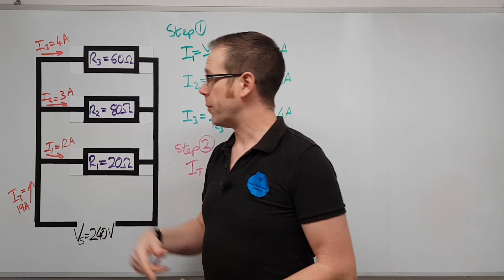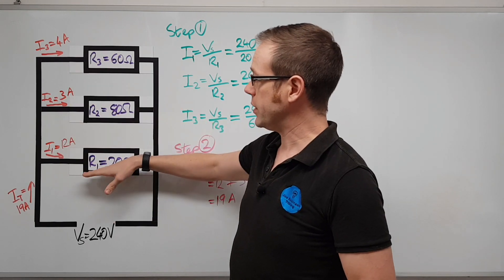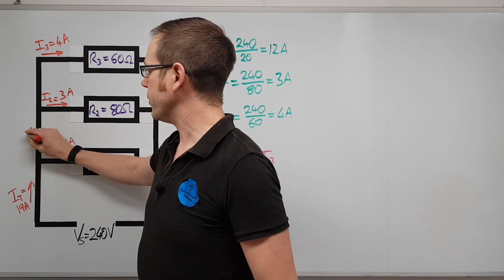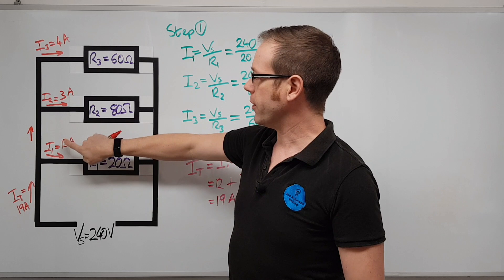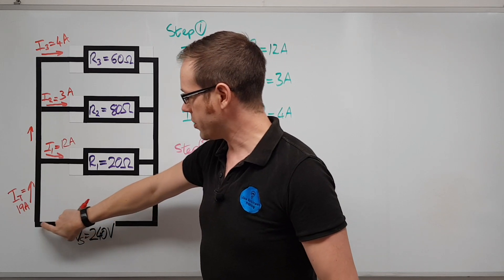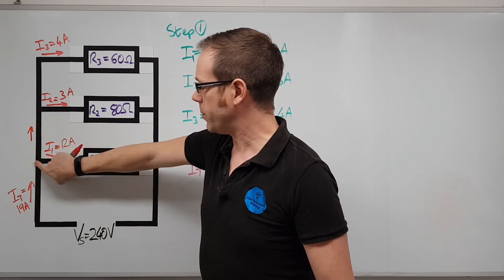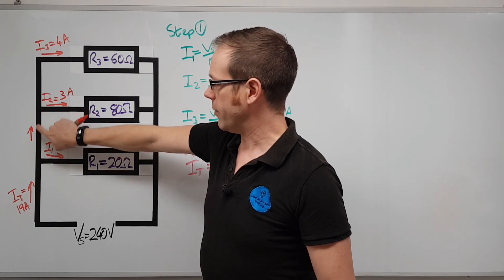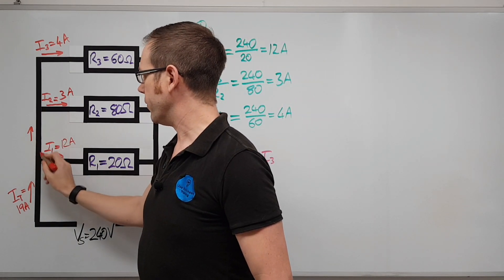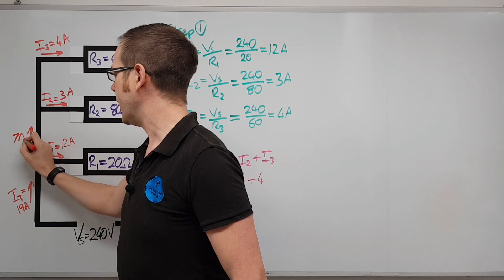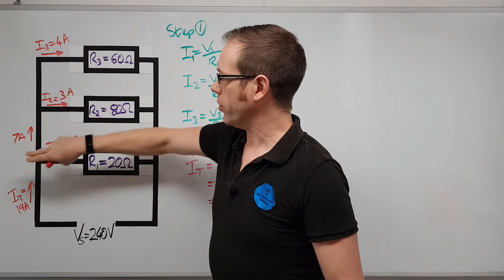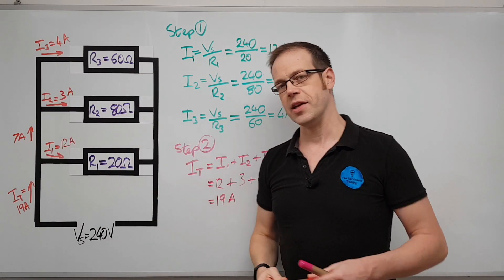We can also figure out the current flowing through other parts of the circuit. Once the total current reaches the first branch, 12 amps splits off into R1, leaving 3 plus 4 = 7 amps continuing to the remaining branches. This makes sense: 19 minus 12 equals 7, or 3 plus 4 equals 7. It all follows logically.